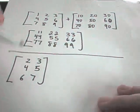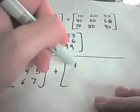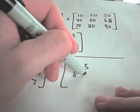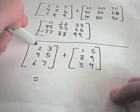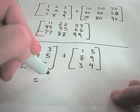So suppose I take this matrix and add to it 1, 5, 8, 9, 3, 4. You're going to do the same thing. The top left plus the top left.